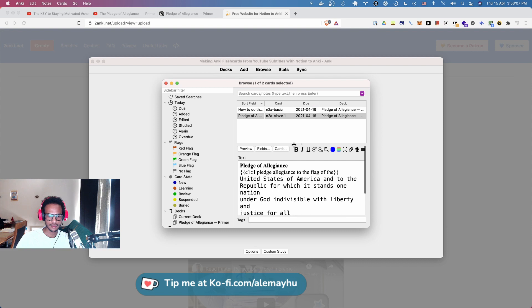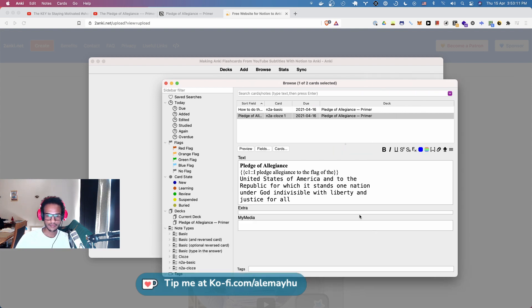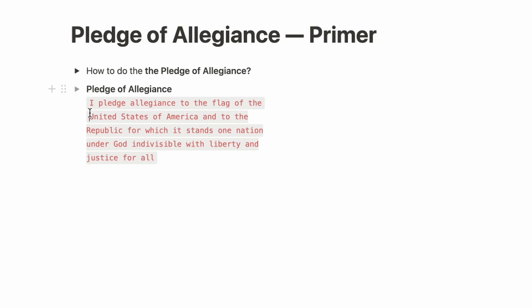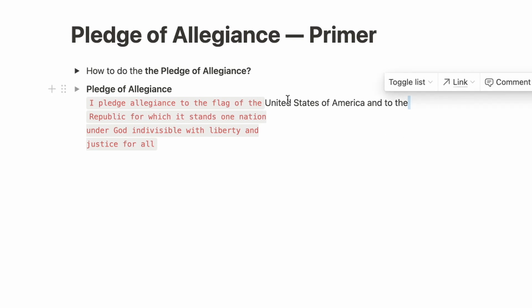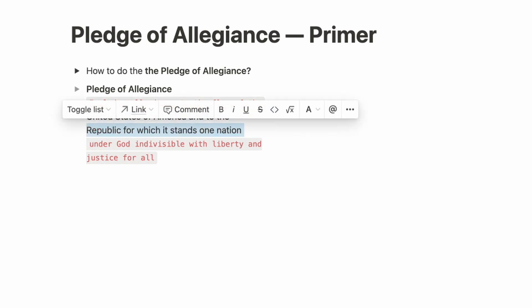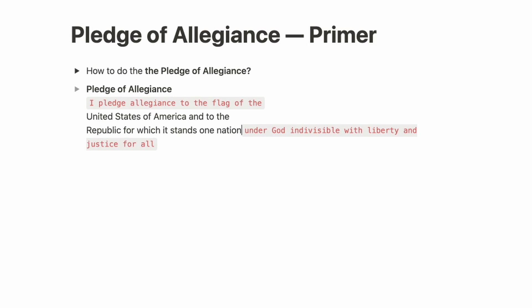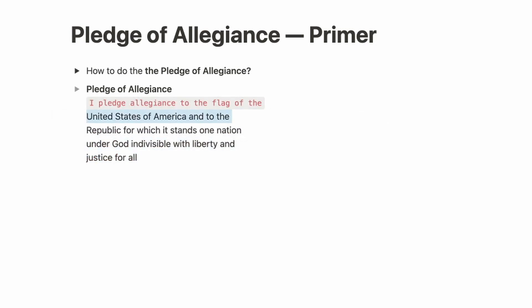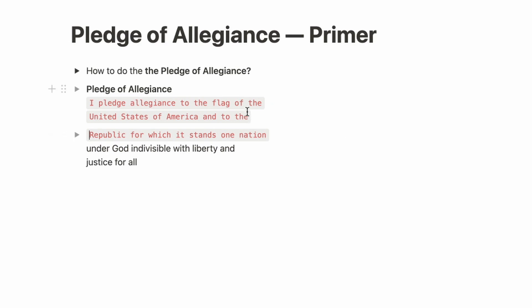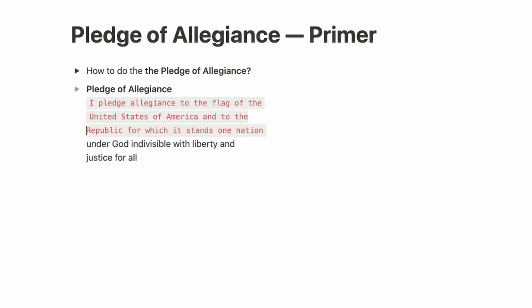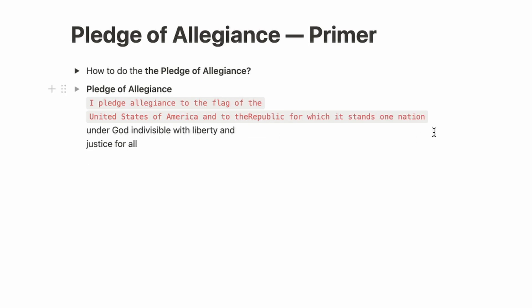That's actually a bug. So if you experience this — sometimes when the Notion export happens it's not able to detect that things are on separate lines. You can fix that by going in, removing the cloze deletion, and just fixing it. Unfortunately this is just a bug; you have to try again until the boundaries are detected. If there's no spacing, it means it's broken — the corners have to be round, otherwise they're treated as the same line.